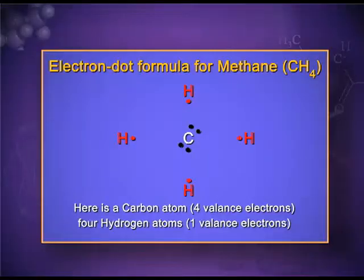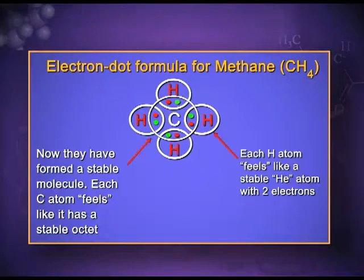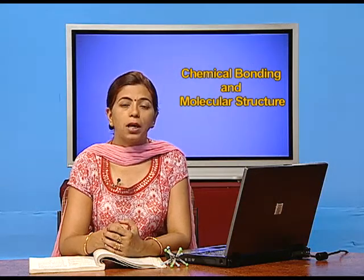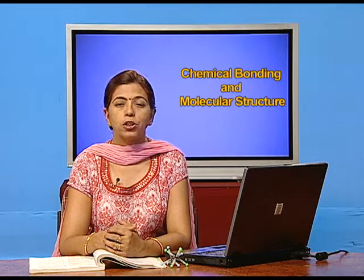Let me take the example of methane to show the electron dot structure. Carbon has four electrons in the valence shell and hydrogen has one electron each — they will form a covalent bond, a bond formed by the sharing of electrons. The red dots represent the single electron of hydrogen, and the black dots are the four electrons of carbon. By the sharing of these electrons, the duplet of hydrogen is complete and the octet of carbon is complete — both are in the stable state. Lewis dot structure is a very simple and convenient method to show the sharing of electrons.